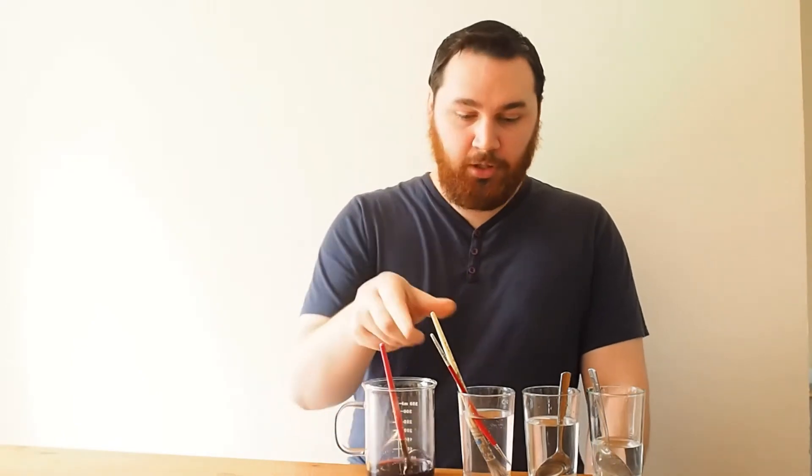If you want to follow along, everything you need is in the description. You'll need a few paintbrushes and the red cabbage indicator that we've shown you how to make. Water, some extra brushes, and then a basic solution, and I used sodium carbonate for mine, and an acidic solution which you can make up with some lemon juice.